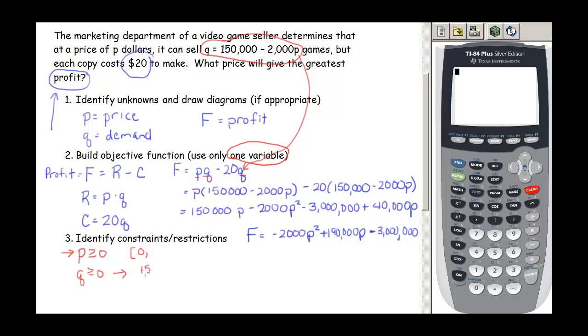And if we look at this Q being greater than or equal to zero, this tells us that 150,000 minus 2,000P has to be greater than or equal to zero. And if you solve this, so move this 2,000P over on the right hand side of the inequality, divide both sides by 2,000, we're going to get P is less than or equal to 75. So the other side of our interval is 75.